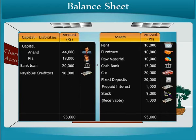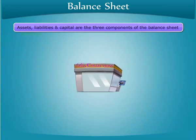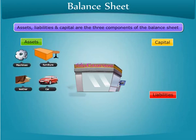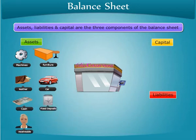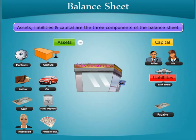Ria shares the concepts of a balance sheet with you so that the concept becomes clear. Assets, liabilities, and capital. Assets include machine, furniture, leather, car, cash, fixed deposits, receivables, and prepaid expenses. Capital is the owner's fund and bank loan. Liability is payables. The fundamental equation is: Assets equals Liabilities plus Capital.